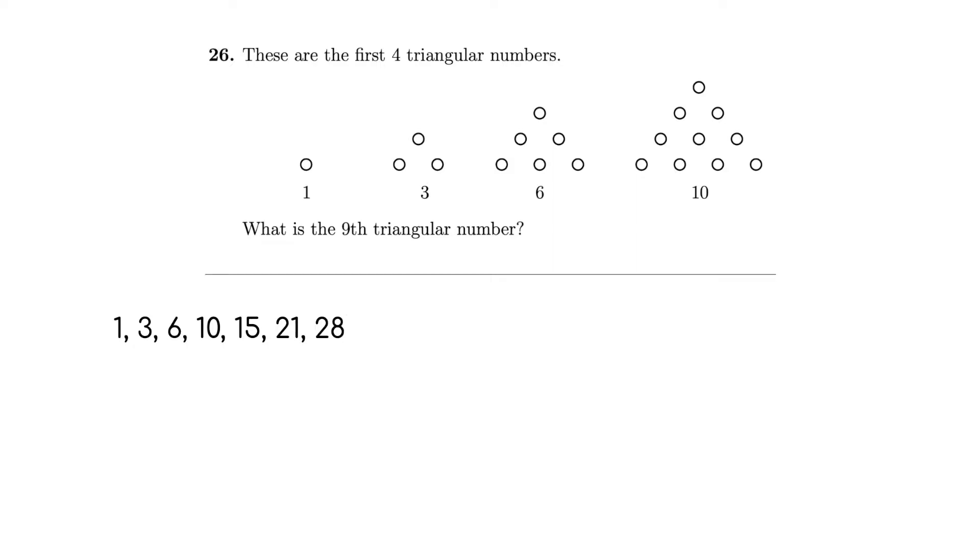We add seven. That's going to be 28. We add eight. That's going to be 36. And we add nine. That's going to be 45. Those are the first nine triangular numbers. So that means the ninth triangular number is 45.